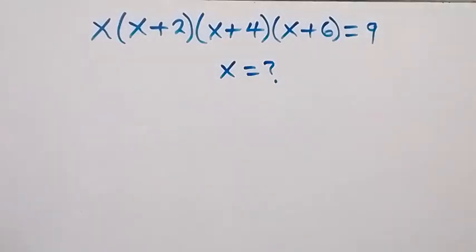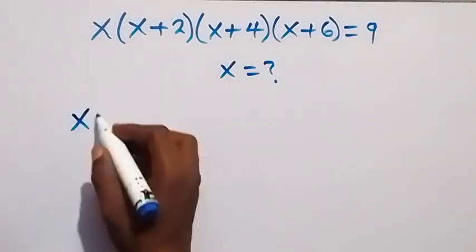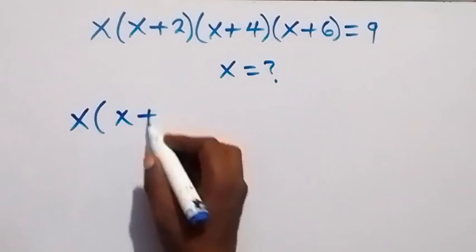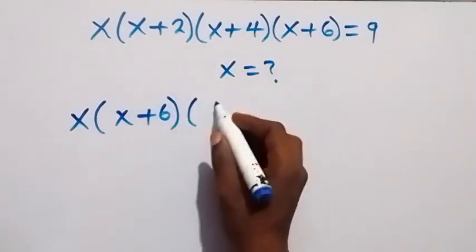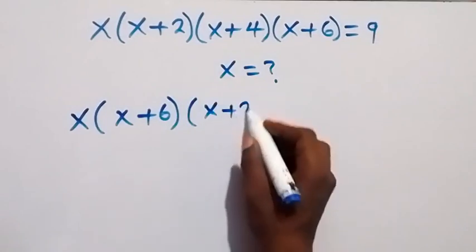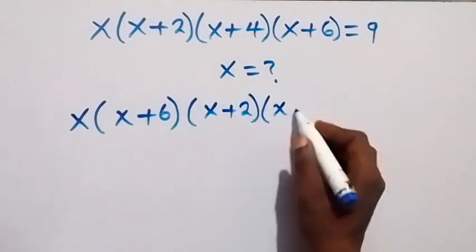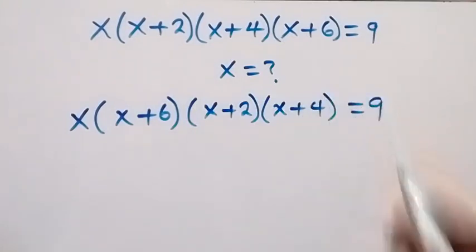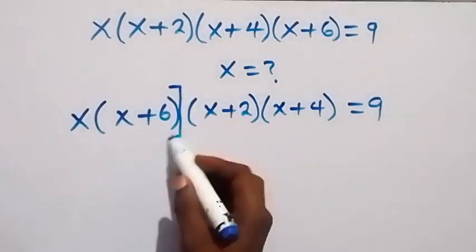Let's rearrange and we bring x and x plus 6 together. So we have x into bracket x plus 6, then also we bring this together — we have into bracket x plus 2, then multiplied by x plus 4, and here we have equals to 9.